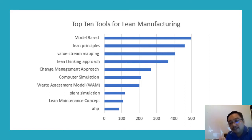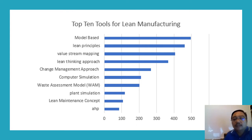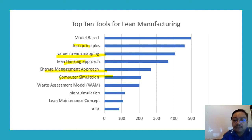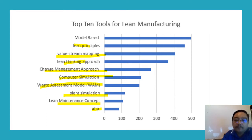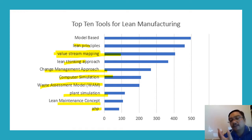From analyzing around 4,000 articles, using my skills to do this listing, I found the top 10 tools for lean manufacturing. They are: model-based lean principles, value stream mapping, lean ticket approach, change management approach, simulation, and waste assessment.